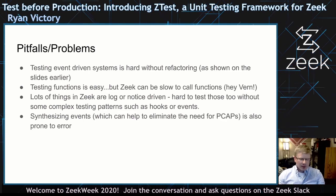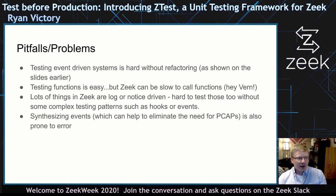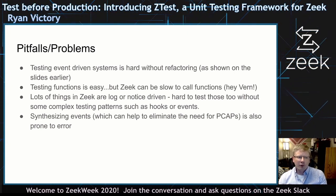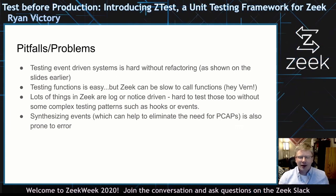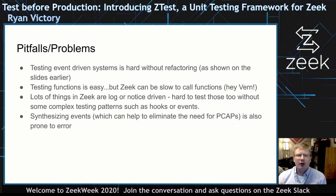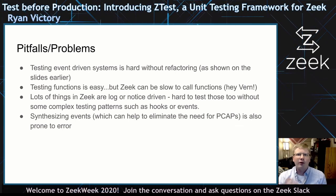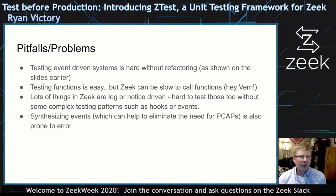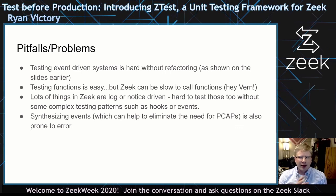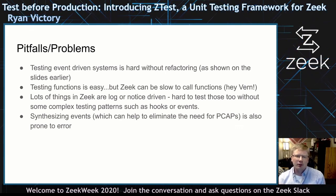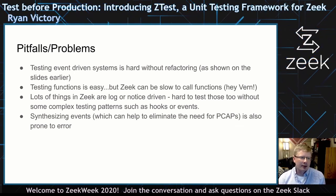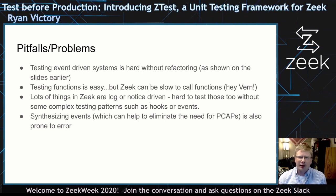There are some pitfalls and problems with unit testing Zeek. Testing event-driven systems is hard without refactoring, so if you already have a large code base, some refactoring might have to be done. Also, function testing is easy, but Zeek is kind of slow to call functions — that's why I'm very excited about Vern's work to make function calls not incur a cost, so we can write testable code without worrying about the performance impact. Things in Zeek are often log or notice driven, and there's still some things about trying to test that — like making sure a notice is raised is a little harder. It is okay to still test those things with Btest end-to-end tests.